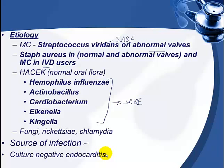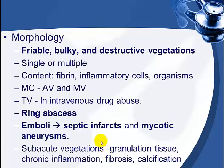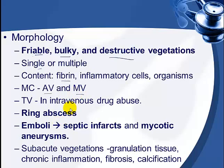Morphologically, the vegetations are friable, bulky, and destructive. They can be single or multiple, and contain fibrin, inflammatory cells, and organisms. The most commonly affected valves are on the left side — the aortic and mitral valves. In cases of intravenous drug abuse, the tricuspid valve is most commonly affected. In some cases, the vegetations may damage the underlying myocardium and cause a ring abscess.